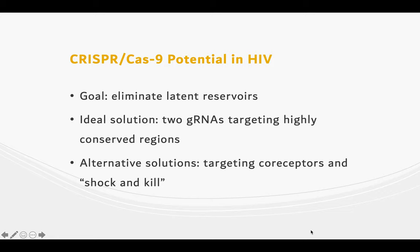Cas9 cleavage and the resulting repair most usually abolishes the functionality by mutating the sequence, but occasionally the repaired insertion and deletion isn't enough to disrupt the functionality and the virus escapes attack from CRISPR. To fix this, two different guide RNAs were introduced into two separate highly conserved regions in the LTRs for dysfunctional assurance.